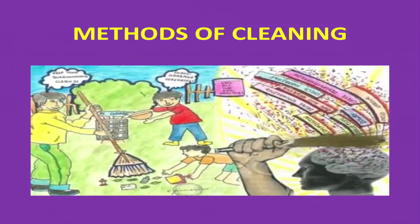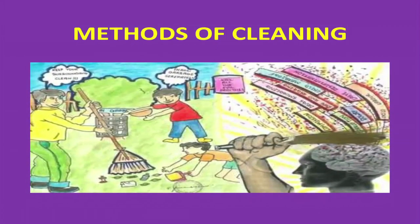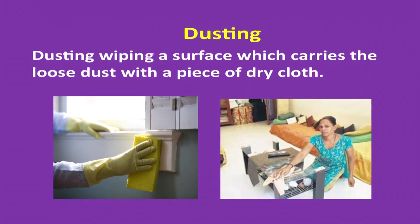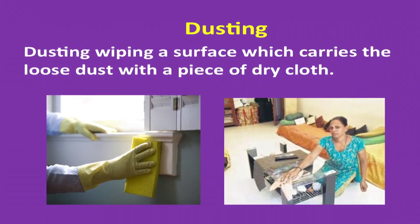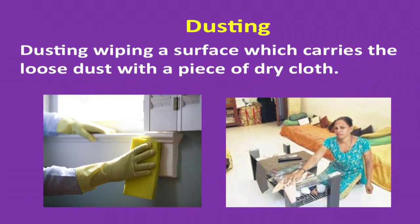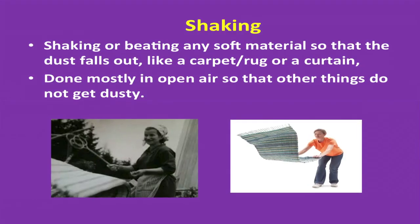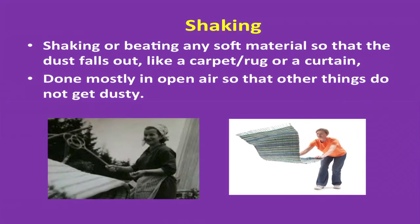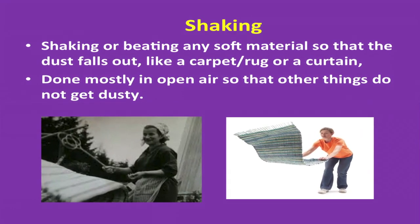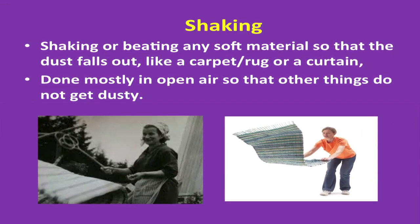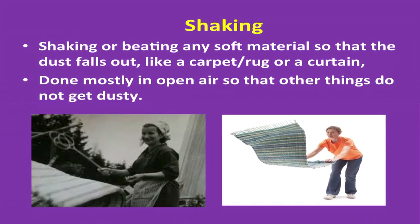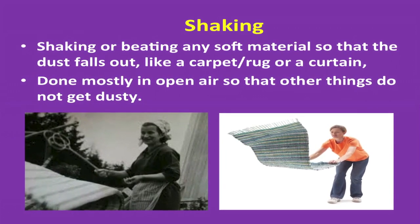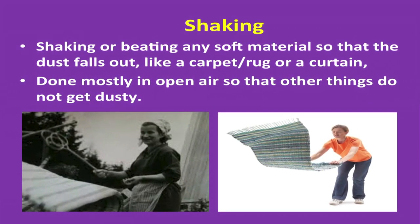Now let's study methods of cleaning. Dusting is wiping a surface which carries the loose dust with a piece of dry cloth. The next method is shaking and beating — shaking or beating any soft material so that the dust falls out, like a carpet, rug or curtain. This is done mostly in open air so that other things do not get dusty.